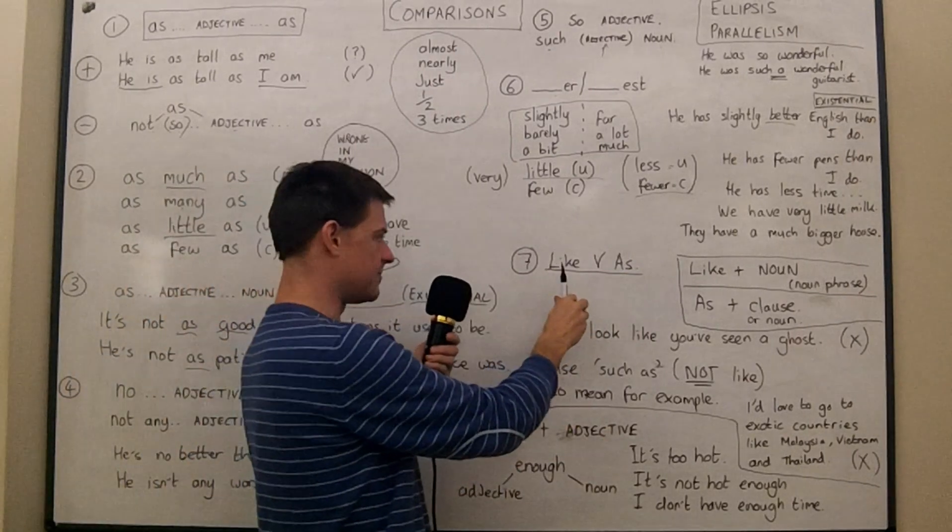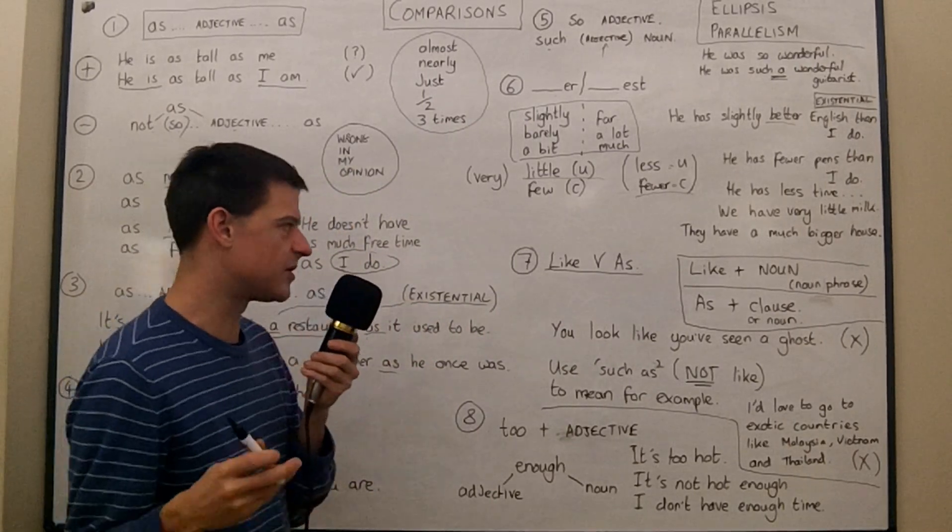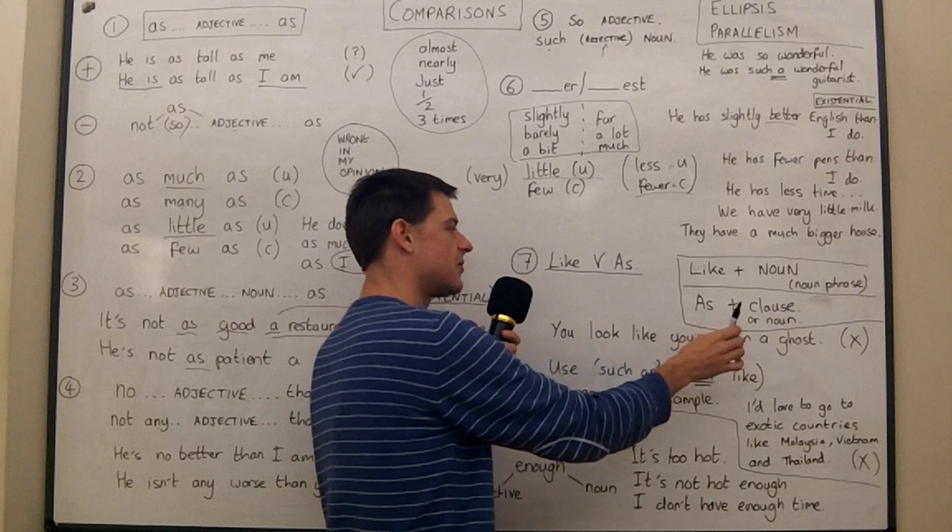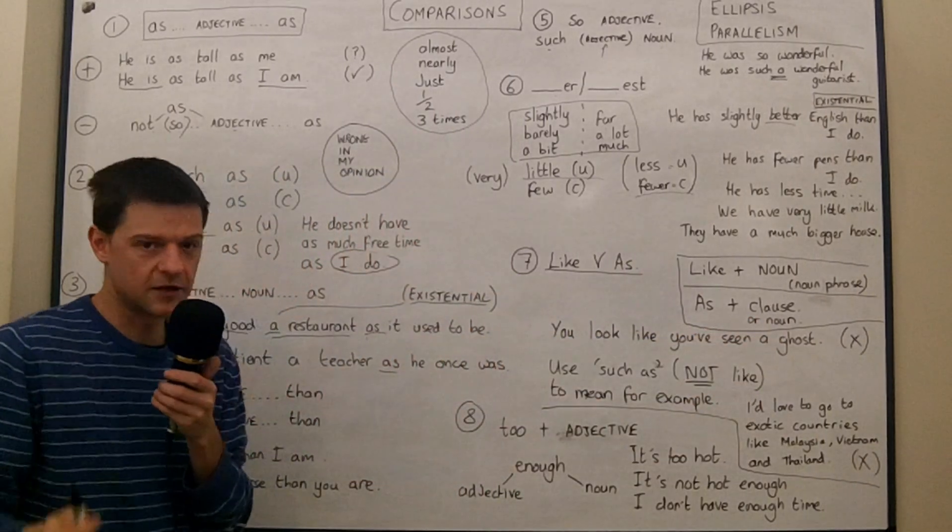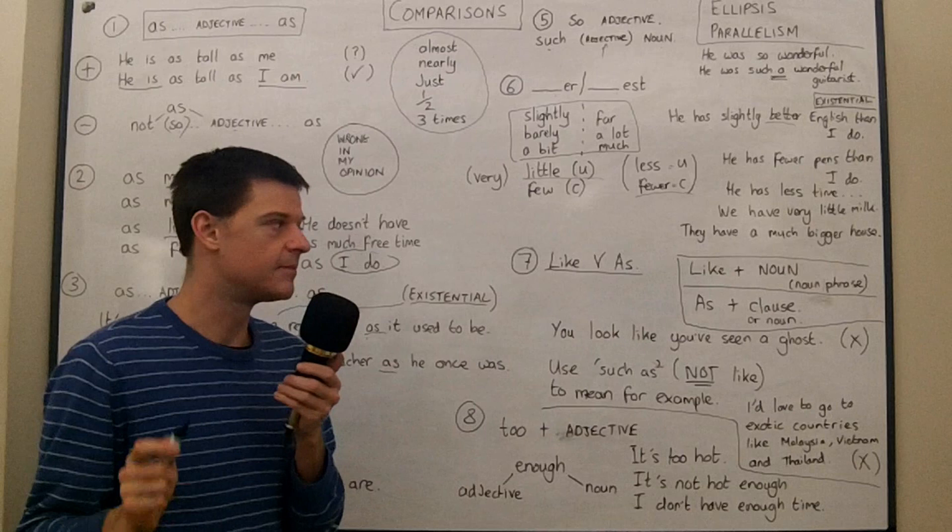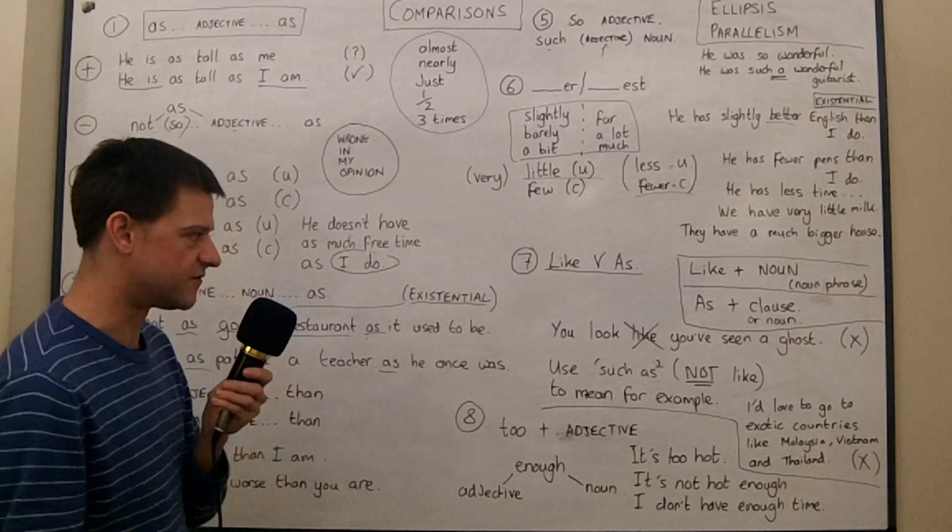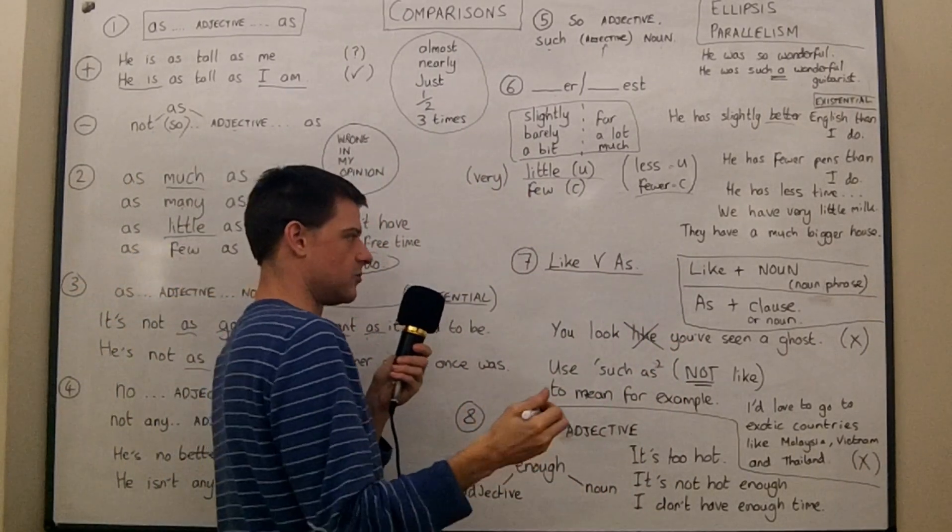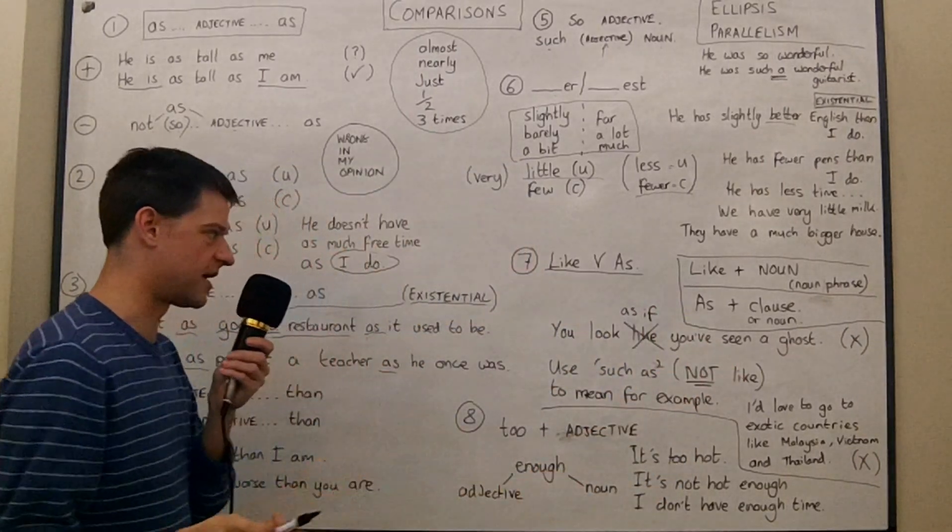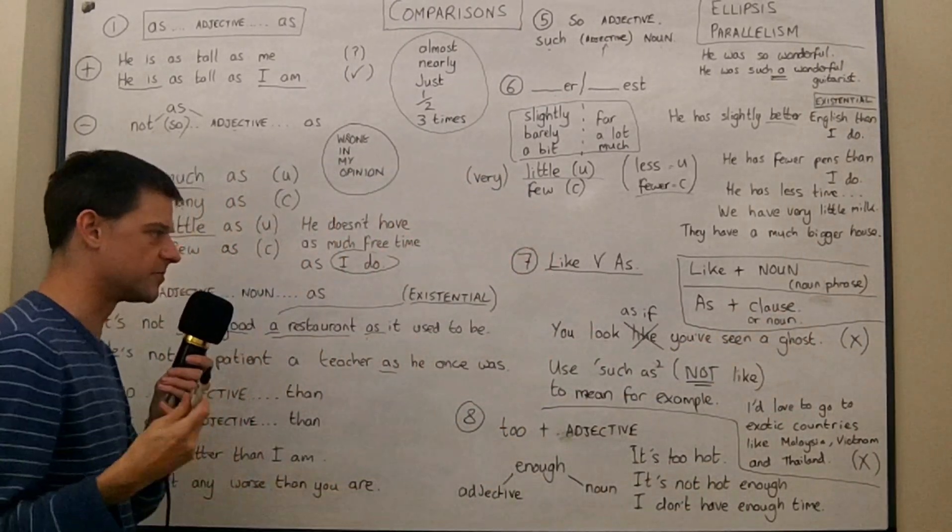OK. And another important thing to remember with comparisons is like versus as. Now, I have another lesson on this. And in that lesson, I only really spoke about how we use these words informally. Because I told you in that lesson that we can use like or as plus a clause. Well, I told you that because that's what we do when we speak. We very often say sentences like this. You look like you've seen a ghost. But actually, that's considered wrong in formal writing. You shouldn't use like before a clause in formal writing. You should use as before a clause. You should only use like with a noun. And so you look as if you've seen a ghost would be the correct version here. So try to remember that. As plus clause and like plus a noun. Because like is just a preposition.